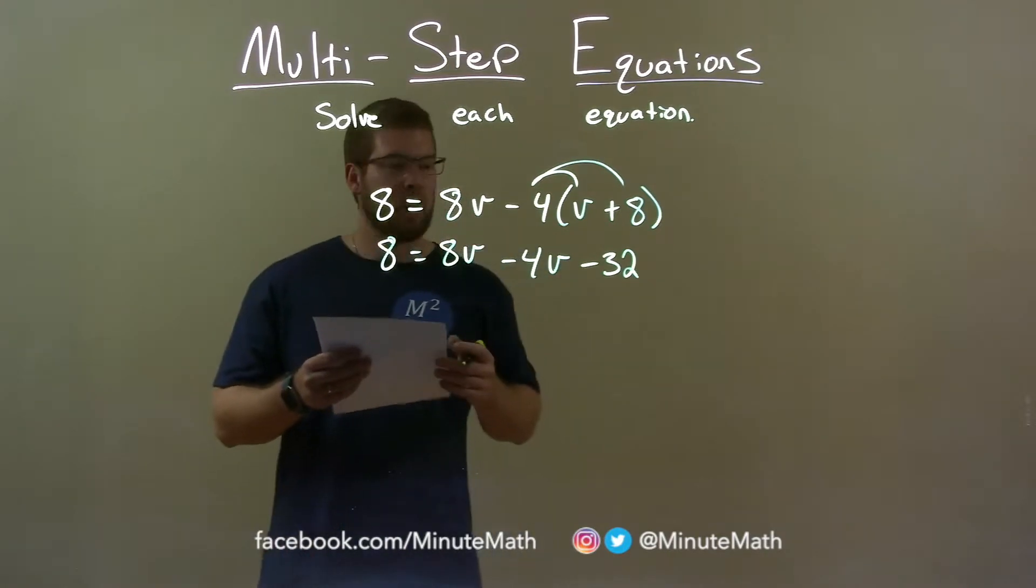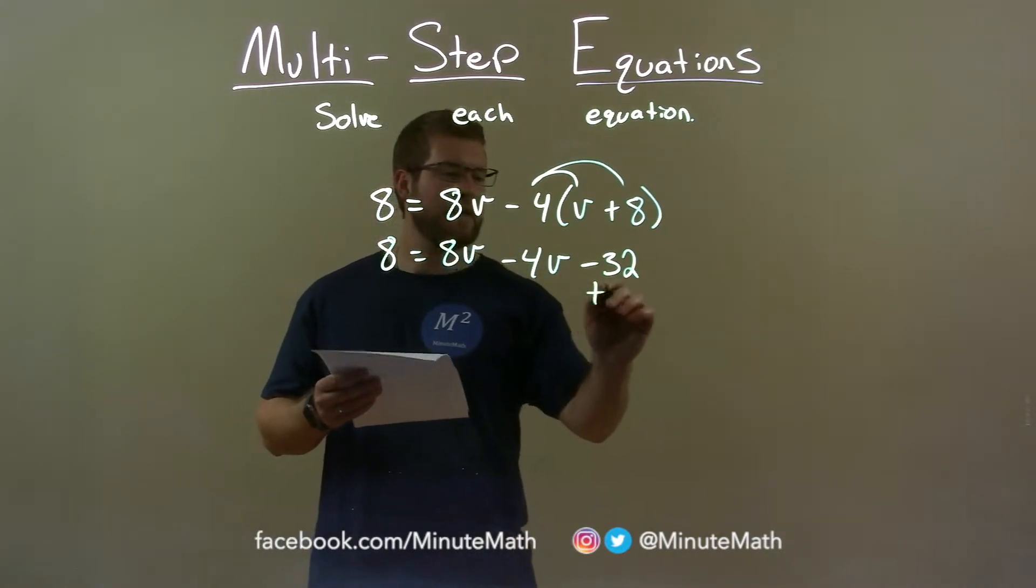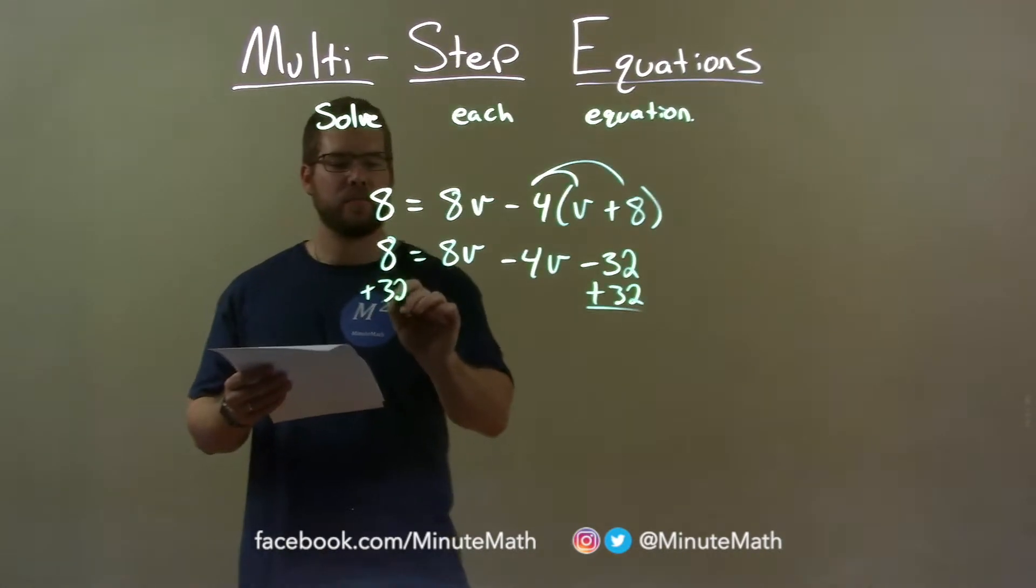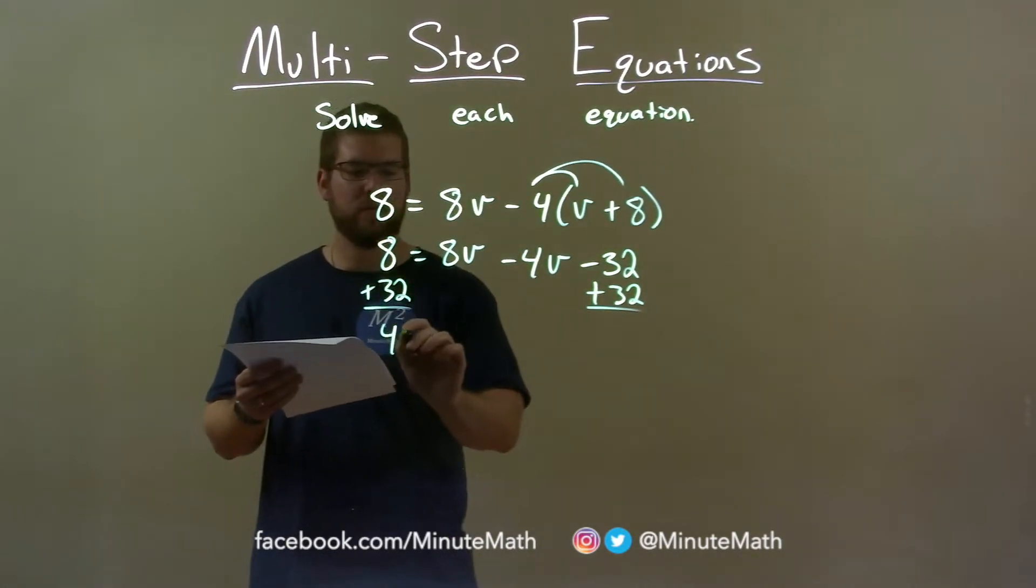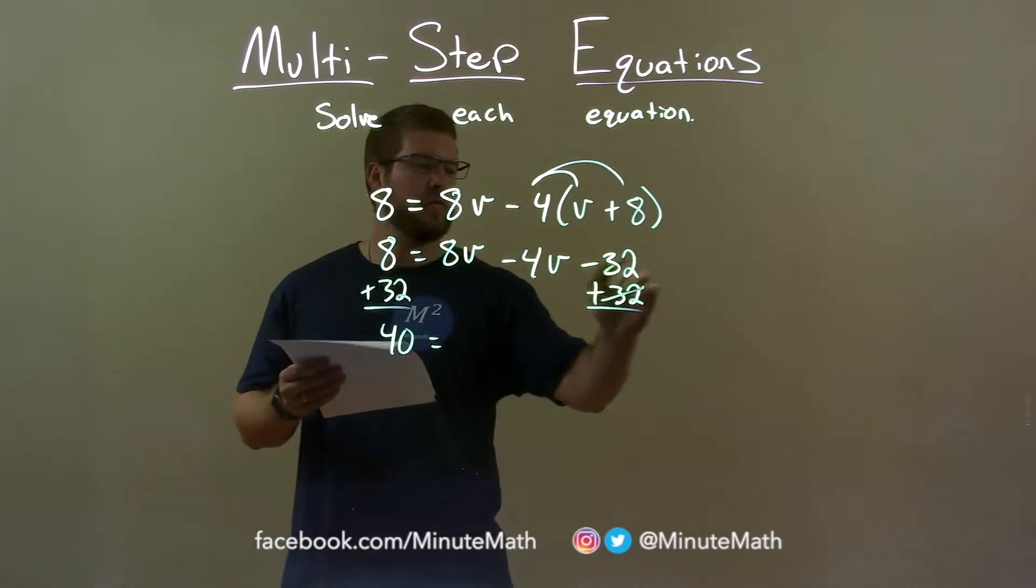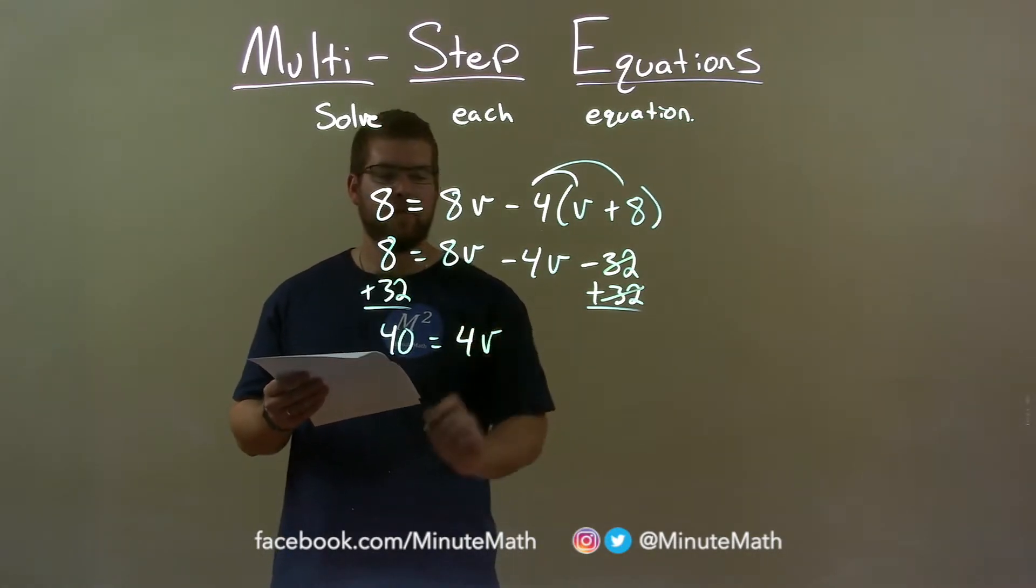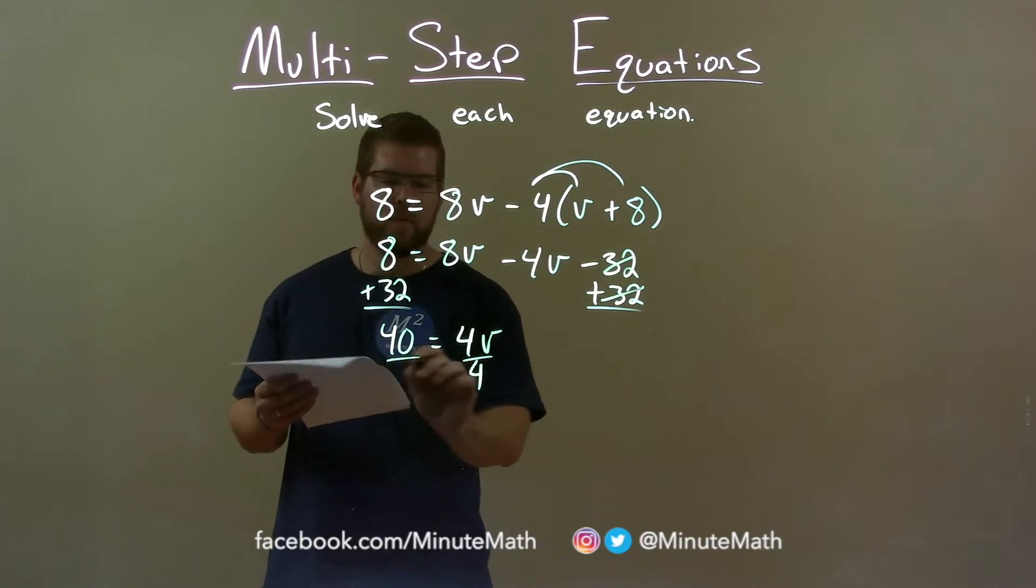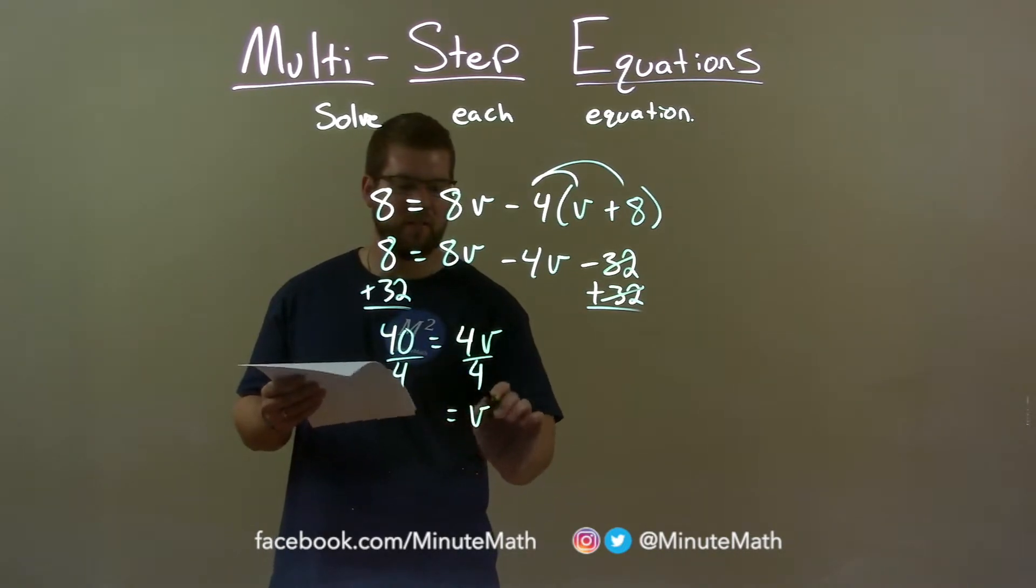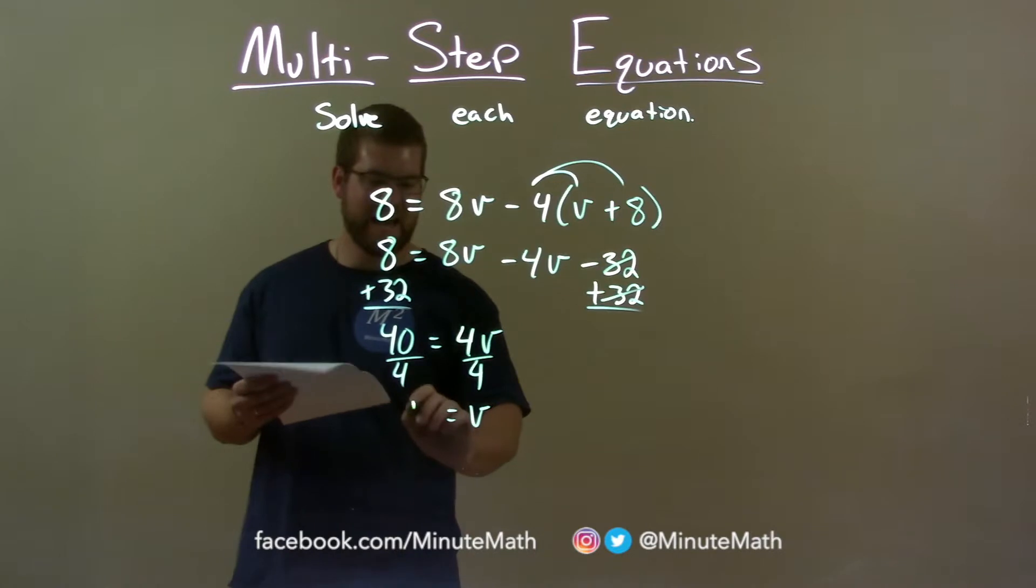Now we're going to combine our like terms. So I'm going to add a 32 to both sides. 8 plus 32 is 40. 32 is cancelled there. Now 8v minus 4v is just 4v. I now can divide both sides by 4. Leave me v by itself. 40 divided by 4 is 10.